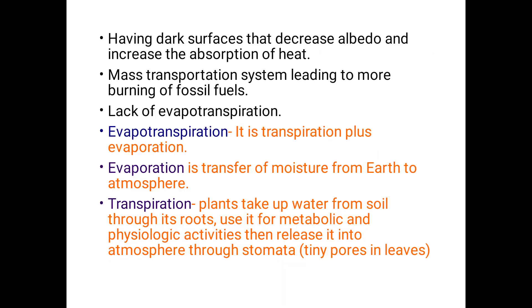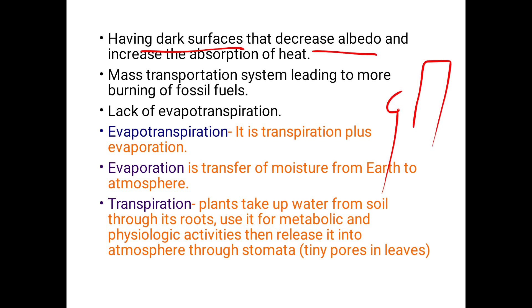Dark surfaces and glass-covered buildings have decreased albedo, which increases heat absorption. Mass transportation systems lead to more burning of fossil fuels. There is also a lack of evapotranspiration due to loss of vegetation.